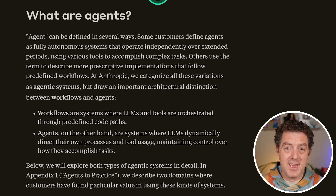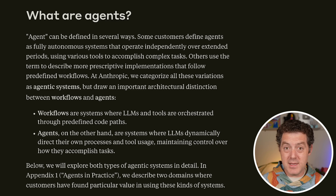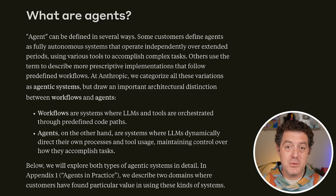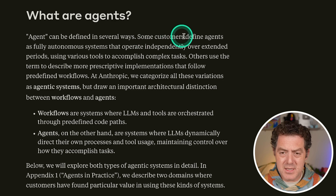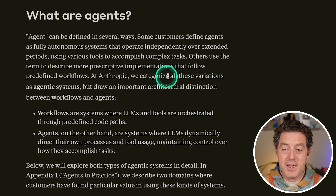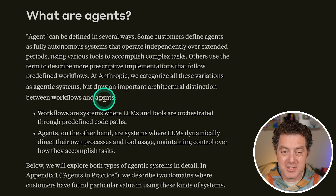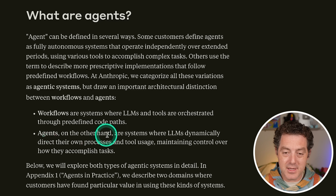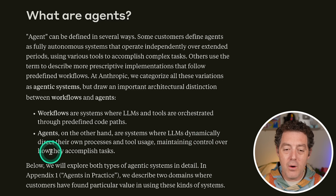Next they go over what is an agent. A lot of people have different definitions. I personally think an agent is essentially the core LLM — the intelligence — wrapped with memory, tools, and the ability to collaborate with other agents. Anthropic says some customers define agents as fully autonomous systems operating independently over extended periods. Others describe more prescriptive implementations following predefined workflows. At Anthropic, they categorize all these as agentic systems, but draw an important architectural distinction: workflows are systems where LLMs and tools are orchestrated through predefined code paths, while agents are systems where LLMs dynamically direct their own processes and tool usage.